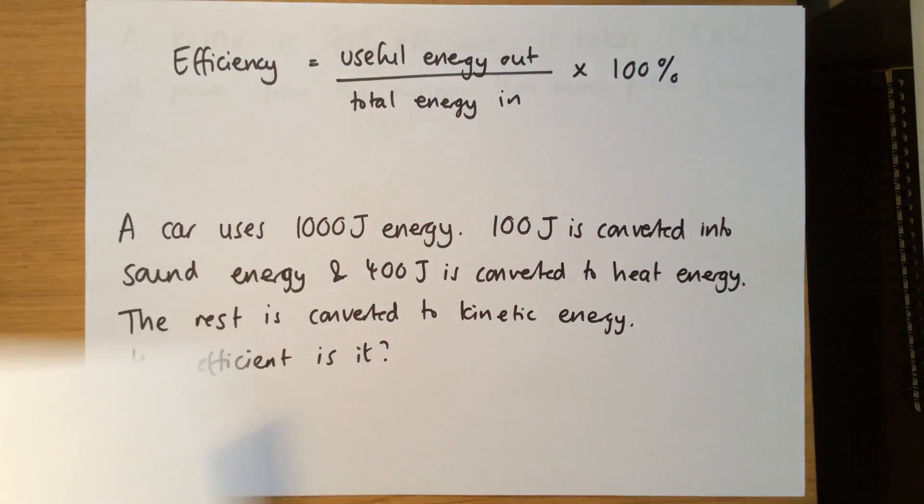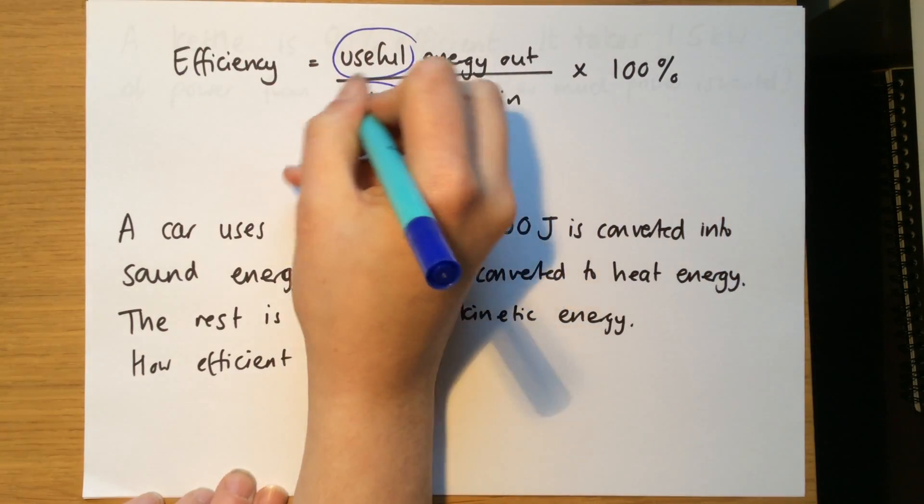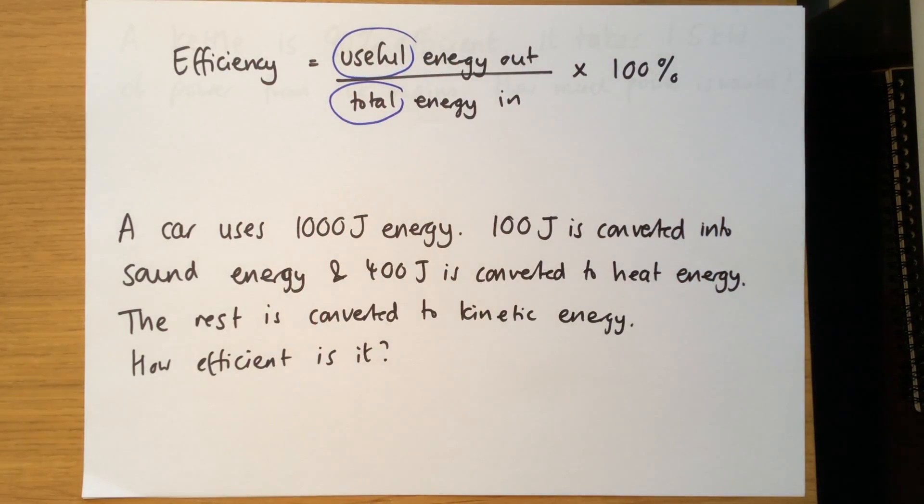So there's an equation we can use to work out efficiency, and it's this one here. Efficiency is the useful energy out divided by the total energy in to a device. And we times it by 100%, because we like efficiency in percentages. Sometimes we would ask for it as a decimal. If you asked for that in a question, you just wouldn't times it by 100%, you'd just leave it as 0.3 or whatever you come out as.